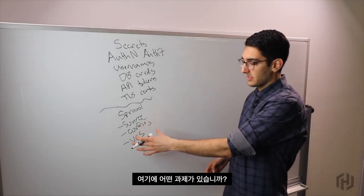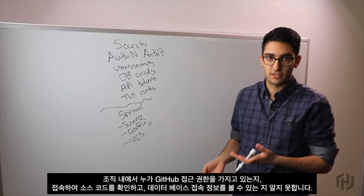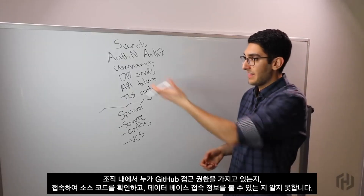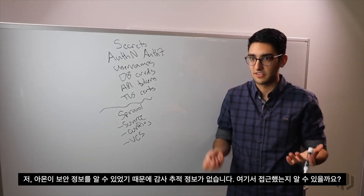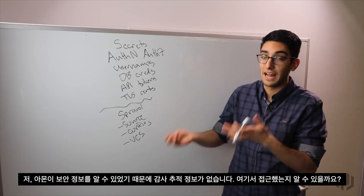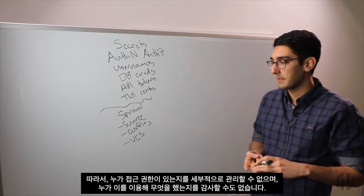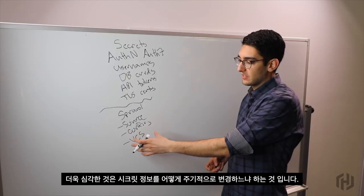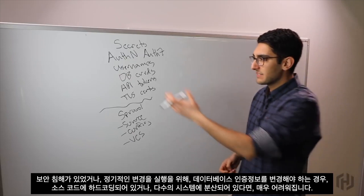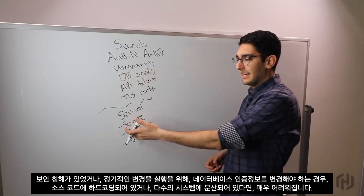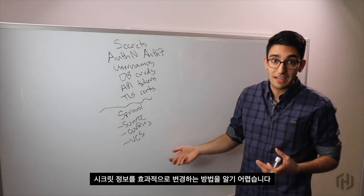What are the challenges with this world? We don't really know who has access to all of these things. Does anyone in our organization with access to GitHub log in and see the source code and thus see our database credentials? And even if they could do it, we don't know if they have done it. We have no audit trail. We have no fine-grained ability to manage who has access or to audit who's done what. Worse yet, how do we actually rotate any of these things? If we need to change a database credential due to a compromise or periodic rotation, it's very difficult when it's hard-coded in source code or strewn about in so many different systems.